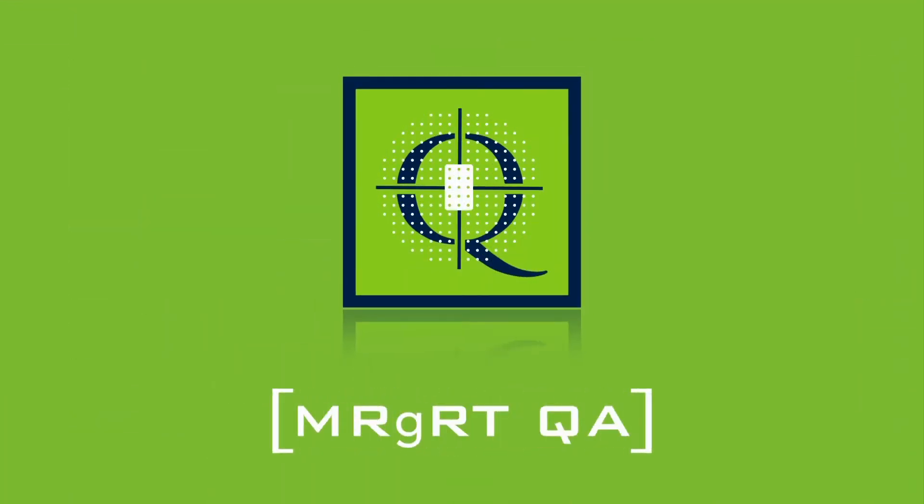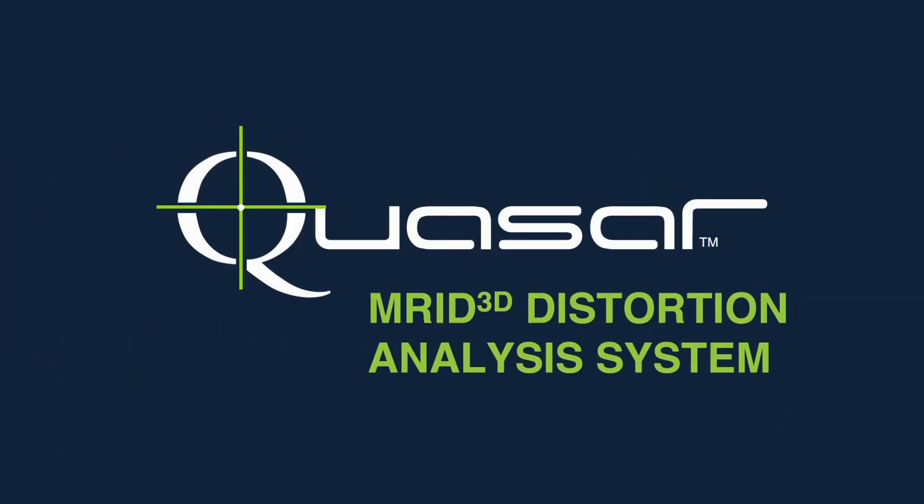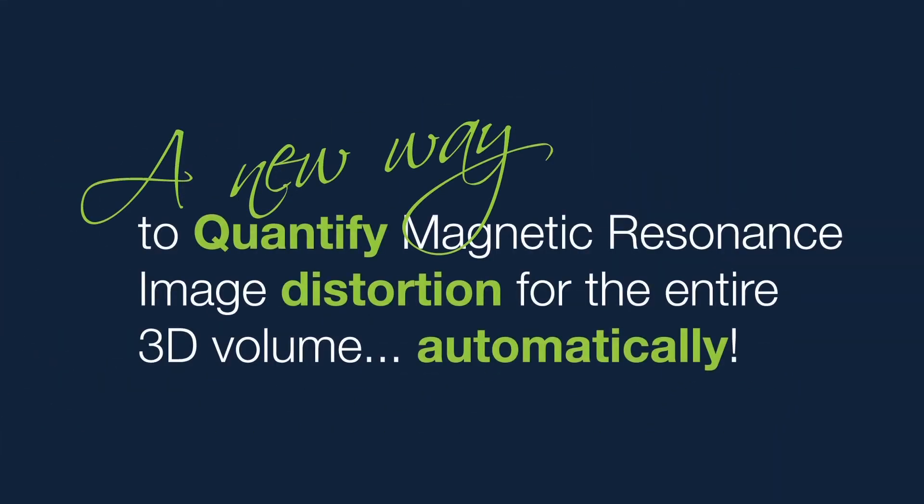The Quasar Amoride 3D Geometric Distortion Analysis System from MODIS-QA is a new way to quantify magnetic resonance imaging distortion for the entire 3D volume, automatically.